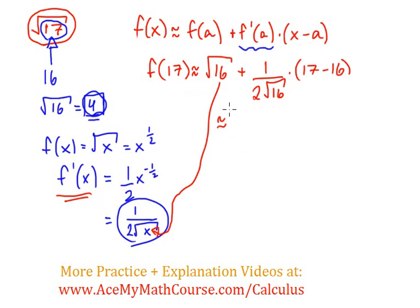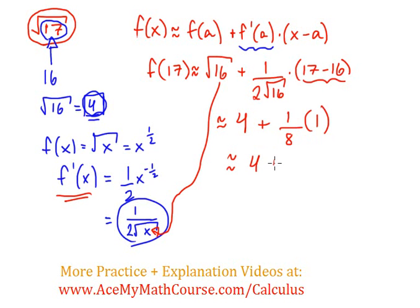So f of 16 is approximately 4, because the square root of 16 is 4, plus 1 over — down here we have 2 times the square root of 16, the square root of 16 is 4, so 4 times 2 is 8 — times 17 minus 16, which is just 1. So we're basically done: 4 plus 1 eighth times 1 is just 1 eighth. Therefore, the square root of 17 is approximately 4 and 1 eighth.